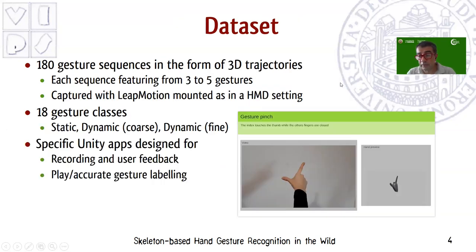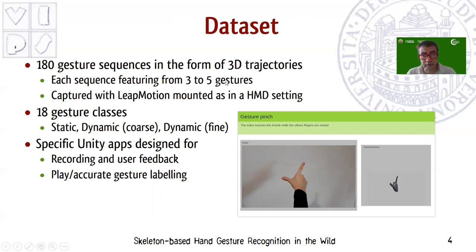For this contest, we built a dataset with 180 gesture sequences in the form of 3D trajectories of hand joints, captured with a Leap Motion device mounted in a head-mounted display capture setting. Each sequence features from three to five gestures interleaved with non-significant motions of the fingers. We developed specific Unity apps for recording the gesture sequences, giving user feedback and to annotate the gestures more accurately.